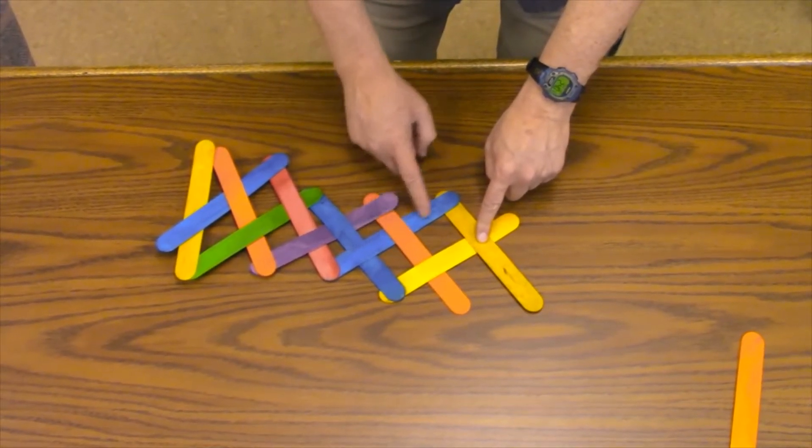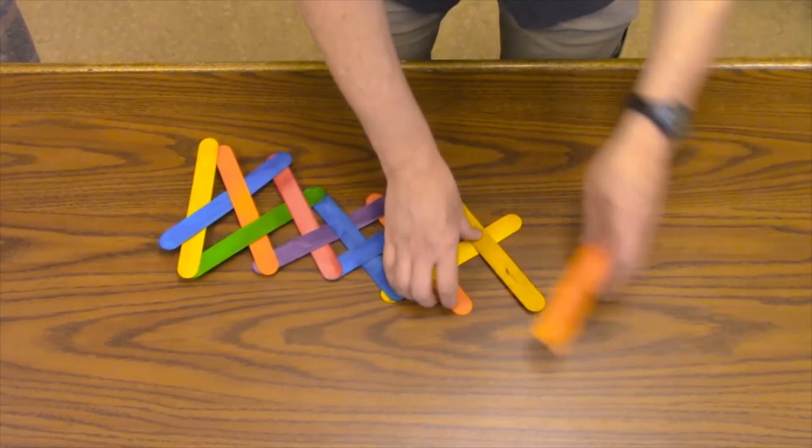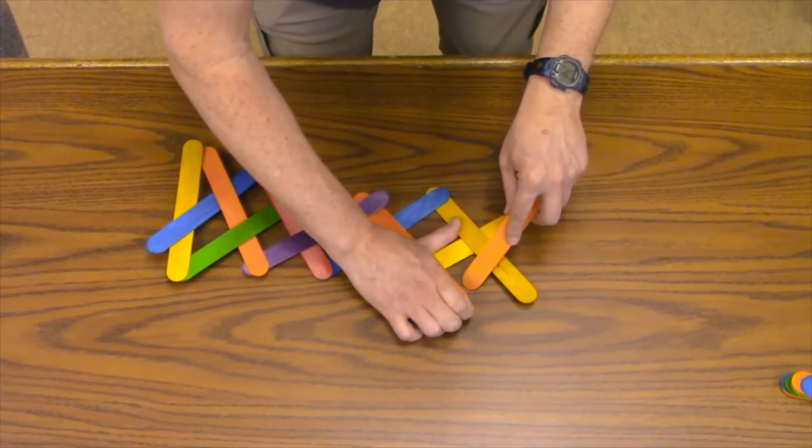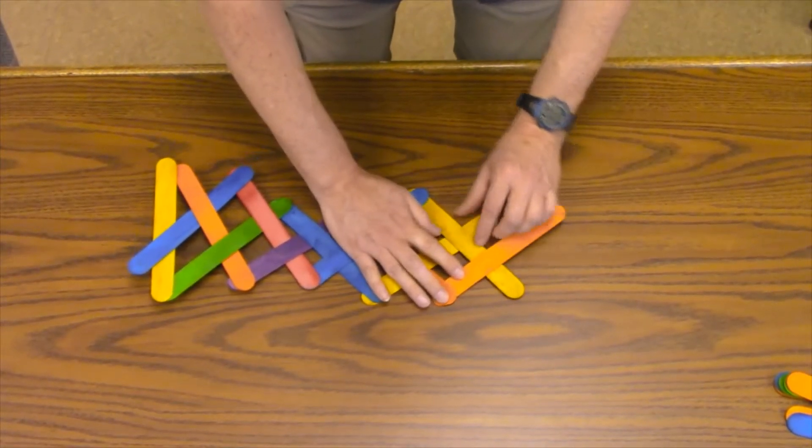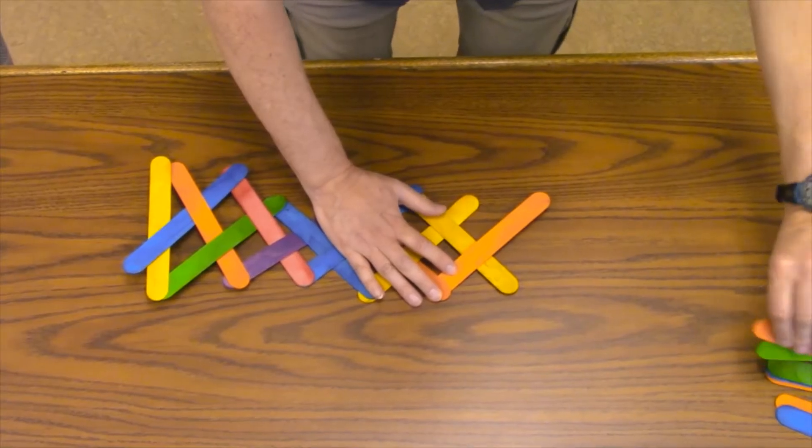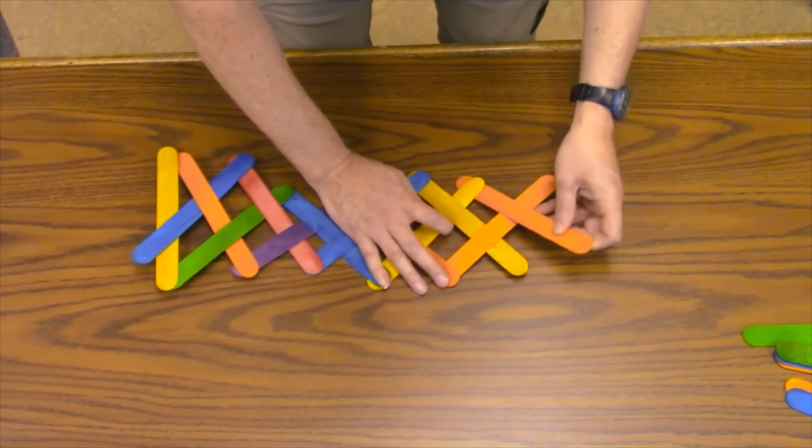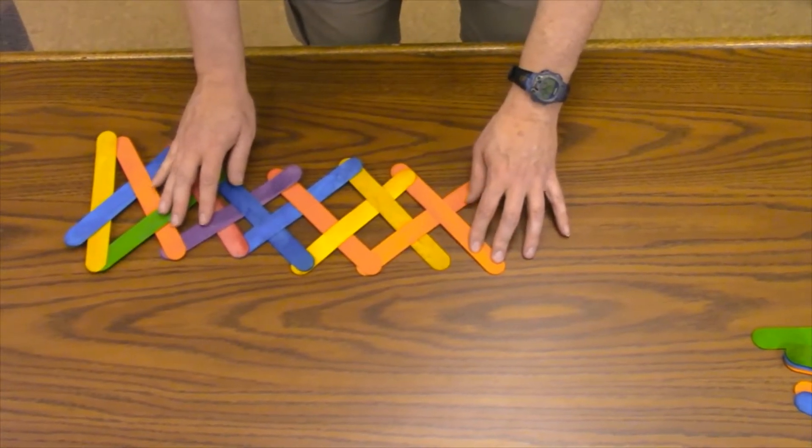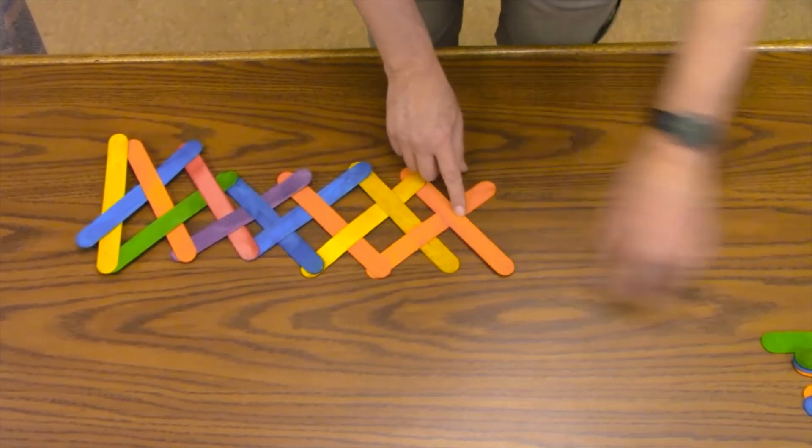So we've got over, under, over, under. And you just keep working it that way. Now this is getting much easier because the weave is starting.